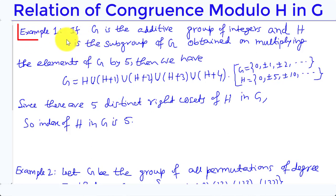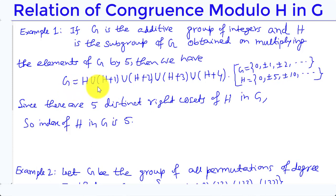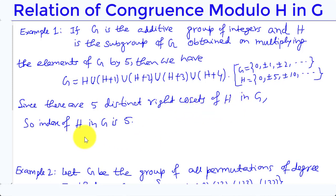Example 1: If G is the additive group of integers and H is the subgroup of G obtained by multiplying the elements of G by 5, then G = H ∪ (H+1) ∪ (H+2) ∪ (H+3) ∪ (H+4). Since there are five distinct right cosets of H in G, the index of H in G is 5.